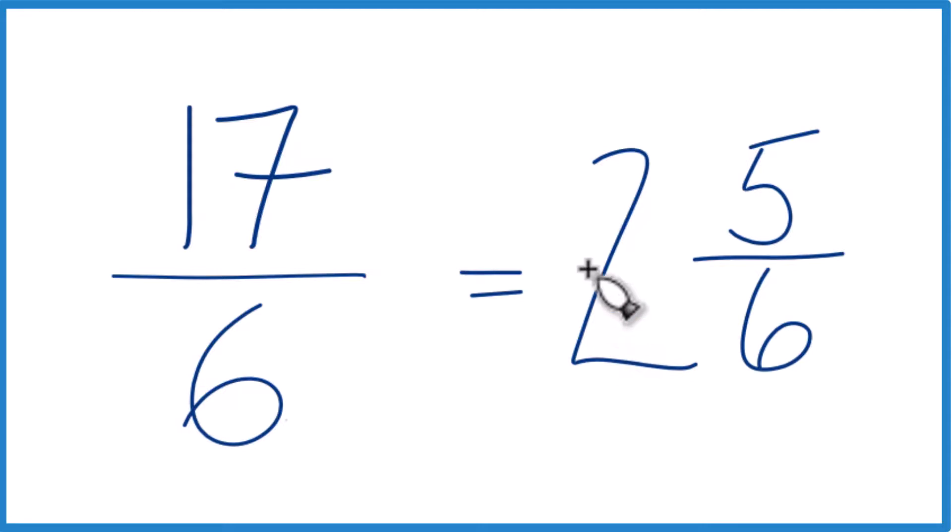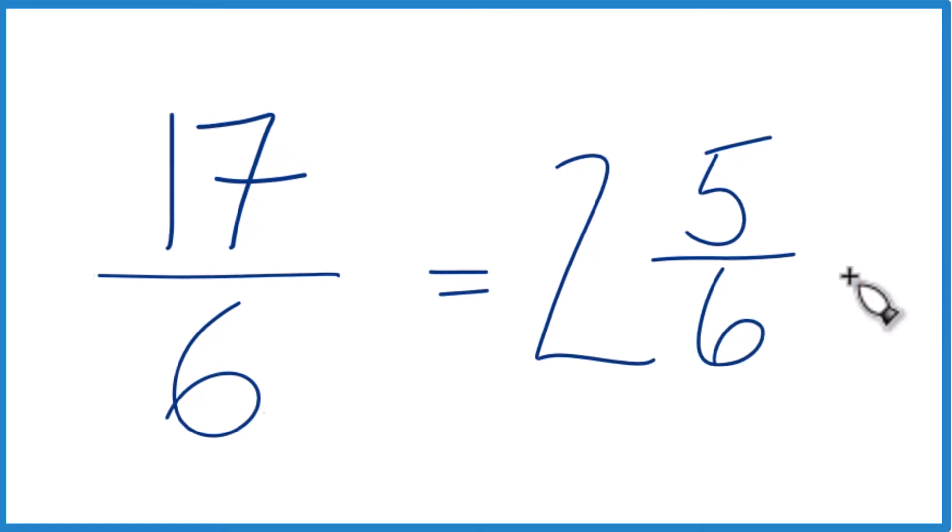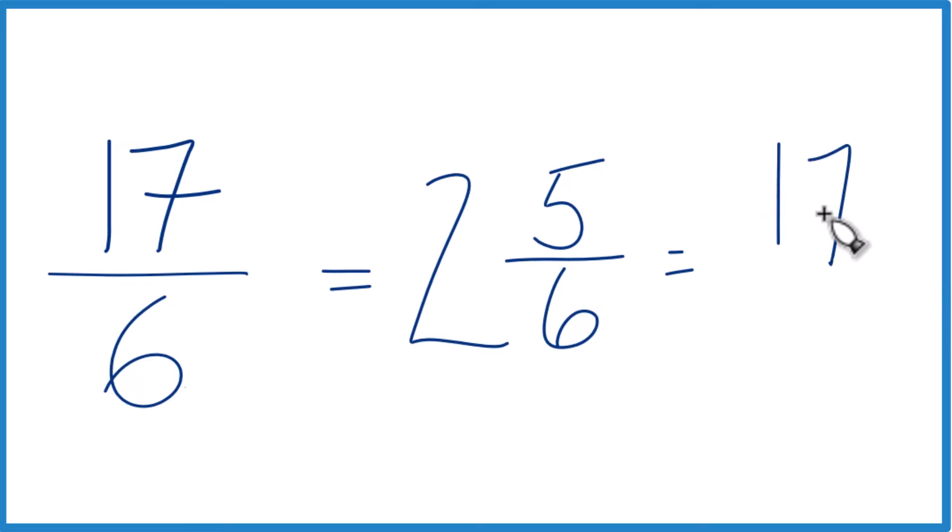It's always good to check your work with these mixed numbers. So the way we can do that is 2 times 6, that's 12, plus 5, that equals 17. And then we bring the 6 across, and we get 17/6, like we started with. So we know we did this right.